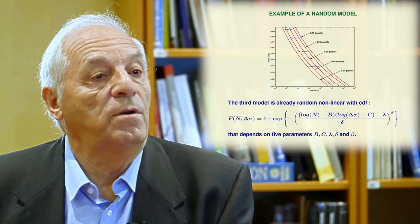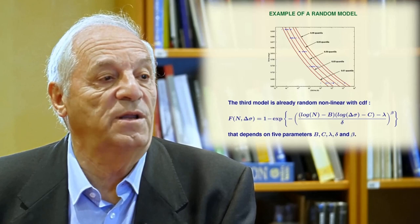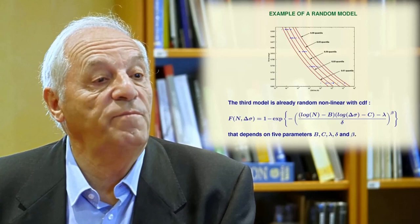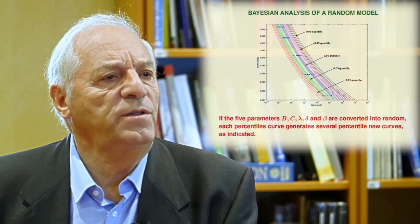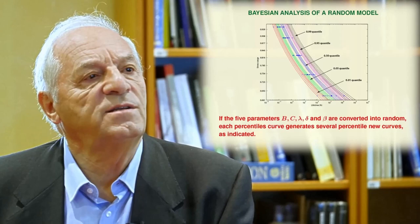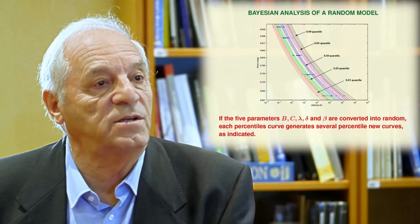The third model is already random, non-linear, with cumulative distribution function given in the lower part of the transparency. This model, though random, depends on five parameters: vc, lambda, delta, and beta. If the five parameters are random, we convert them into random, and then instead of single percentiles, we can think of percentiles of the percentile curves, as you can see in the figure — which is a very original result.